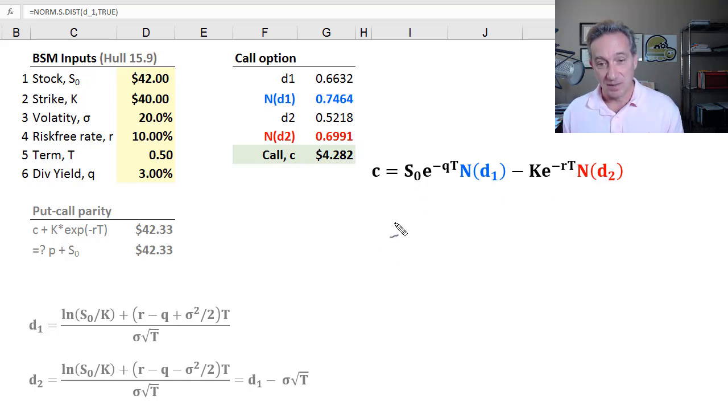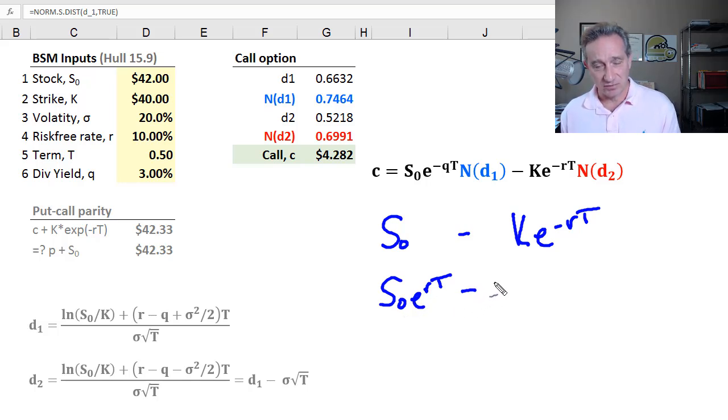The lower bound of the call option is the current stock price minus the discounted strike price. Some have that memorized, some do not. Why is that? We're in a risk-neutral world. You want to always keep that in mind. A lot of theory behind that, but we're in a risk-neutral world, which means that we expect the stock to grow at the risk-free rate, among other things. If the stock were to grow at the risk-free rate, we compound continuously at the risk-free rate over the maturity. That's our continuous compounding.